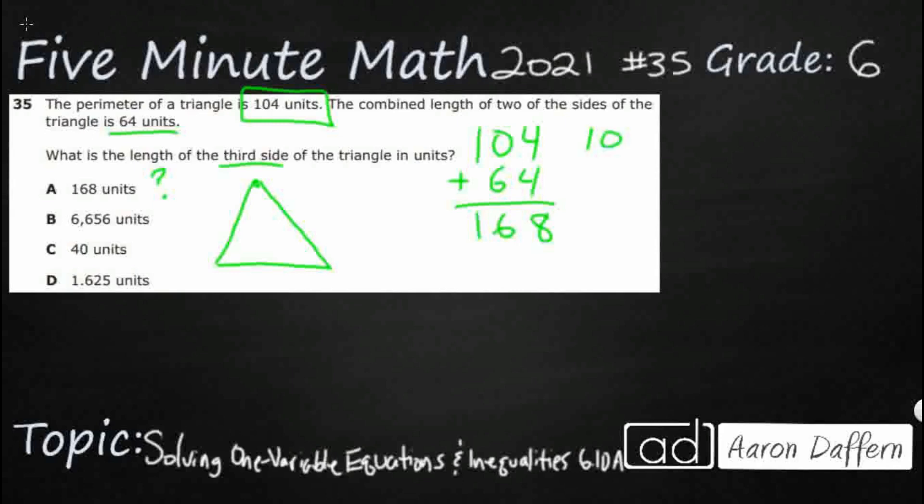Let's take 104 and 64 and let's subtract them. That's going to be 0, 10 minus 6 is 4. Oh, look at that. Maybe the answer is C.